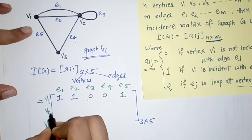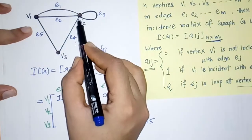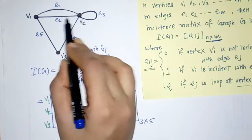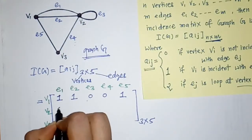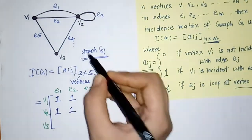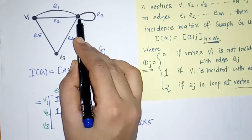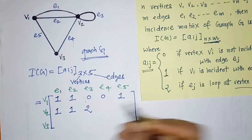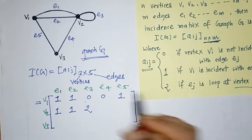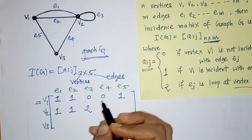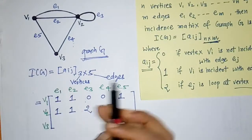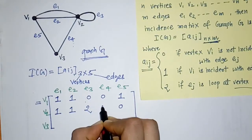Next we check vertex v2. Vertex v2 is incident with e1, so we write 1. Then e2 is incident with v2, so we write 1. Now e3 is a loop here, so we write 2 — when we have a loop at any vertex we write 2. E4 is incident on v2, so we write 1. E5 is not incident with v2, so we write 0.